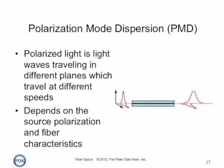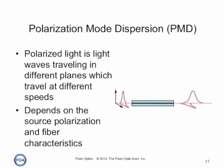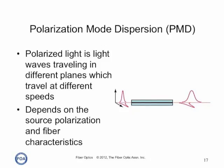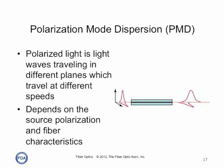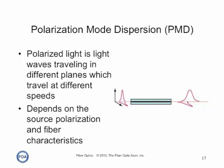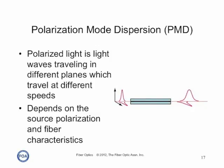Polarization mode dispersion, or PMD, is a bit more complex. Polarization is a phenomenon of light traveling in a medium as waves with components at right angles. Some materials, like a glass optical fiber, may have a different index of refraction for each of these components of the light wave, which is called birefringence. A different index of refraction means light travels at a different speed. In the simplest visualization, PMD in a fiber looks like each component of the polarized light traveling at a different speed, causing dispersion. The magnitude of PMD is expressed as the differential group delay, DGD, or delta tau.